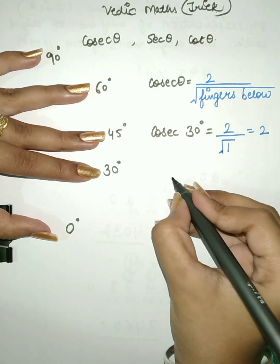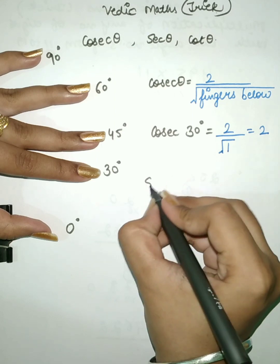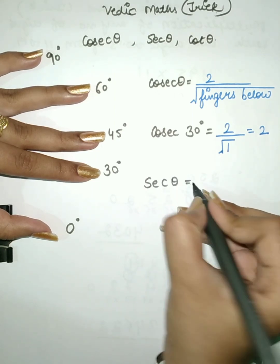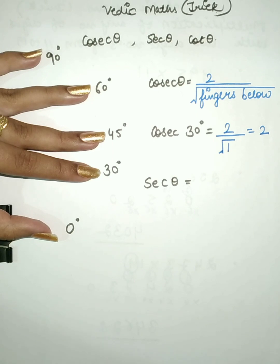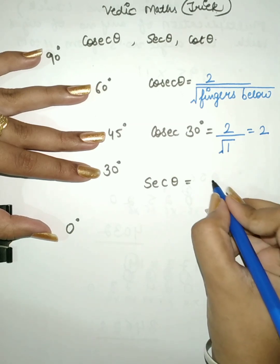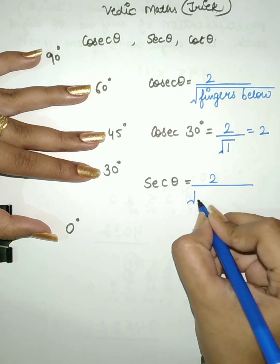Now for finding the value of secant theta, we know that secant theta is the reciprocal of cos theta. And cos theta has the formula root of fingers above divided by 2. So by doing the reciprocal, secant theta has the formula 2 divided by root of fingers above.